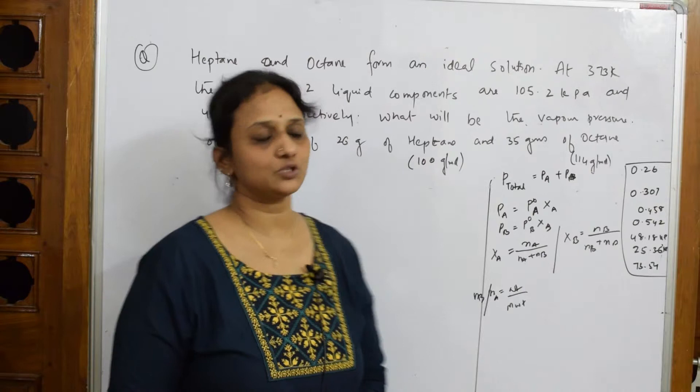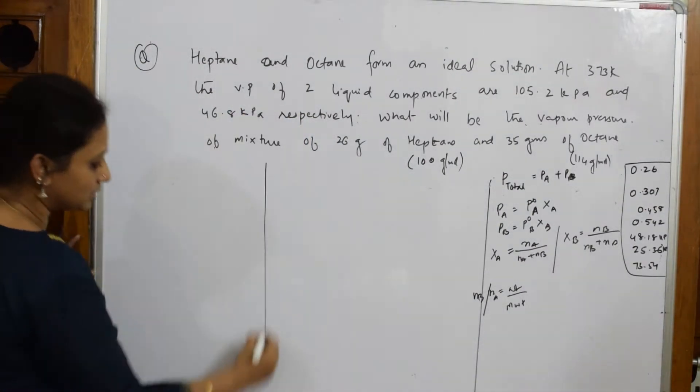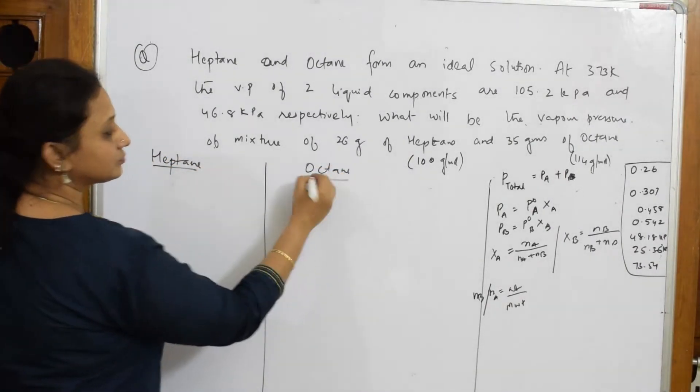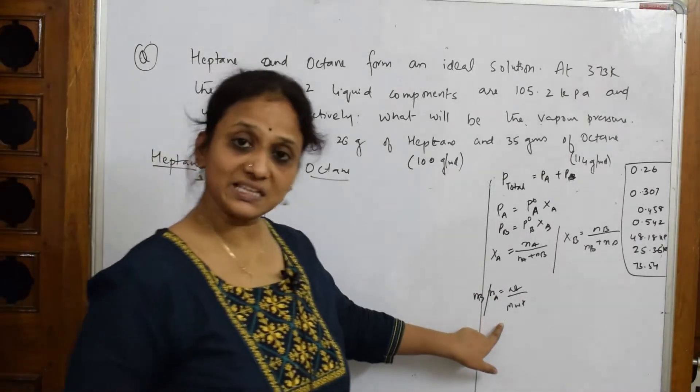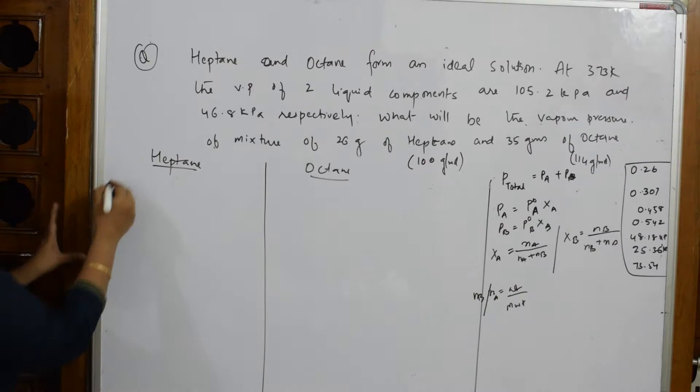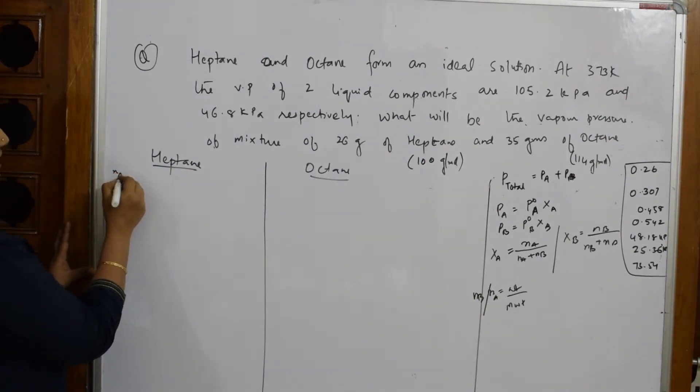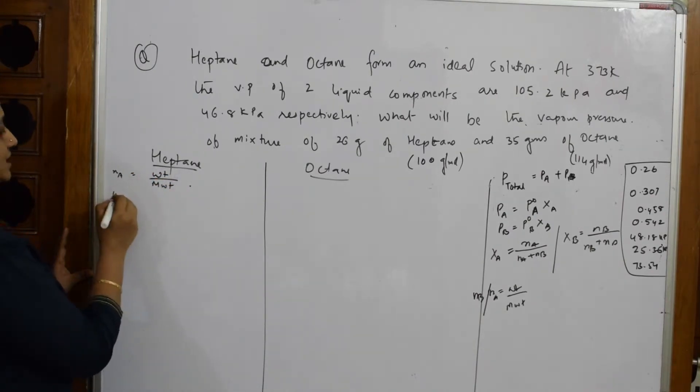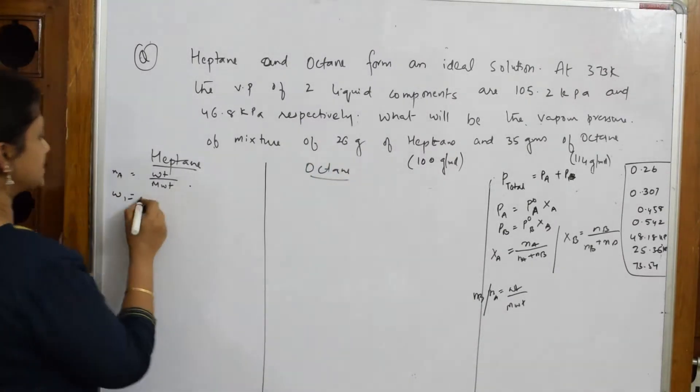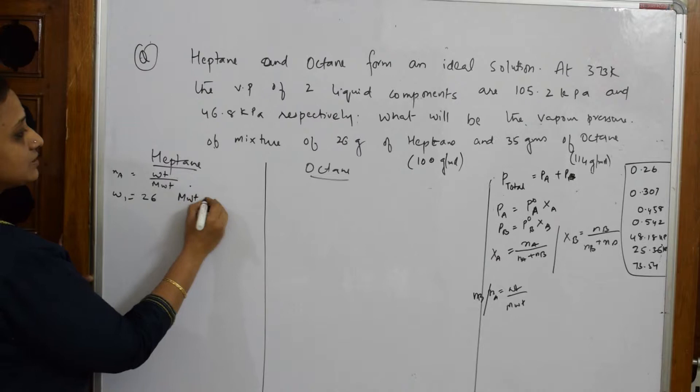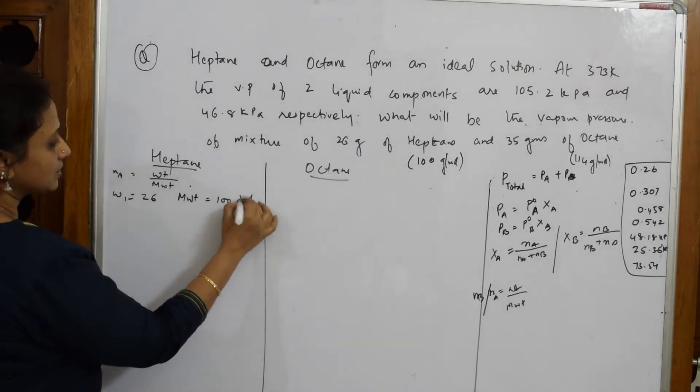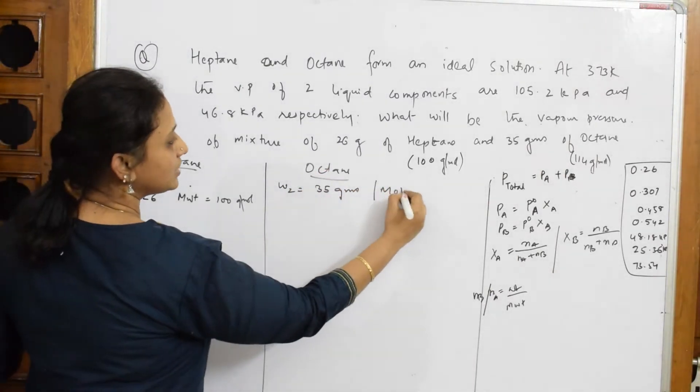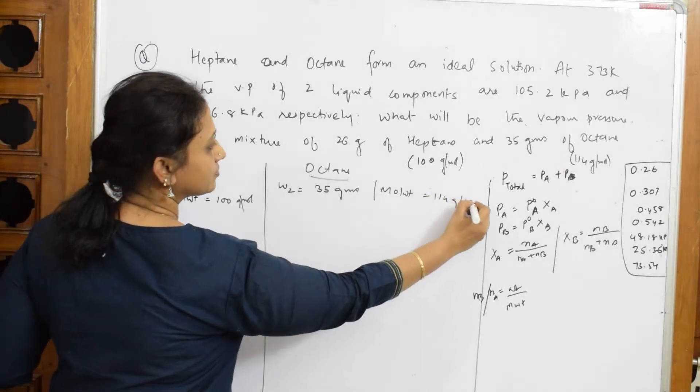Now, let us see what data is given to us. First of all, let us divide the board into two. One is for heptane and the other is for octane. Let us start from this basic one then gradually go up. First, I have to write or calculate number of moles that is NA. For calculating number of moles, this is your formula. What is the weight given for heptane? It is given as 26 grams. What is the molecular weight given? 100 grams. For octane, weight given is 35 grams. Molecular weight is 114 grams.